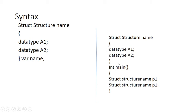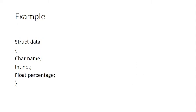You define the structure first, then declare variables like: struct structure_name p1, struct structure_name p2, struct structure_name p3 — and so on. This is another valid way to declare your variables for a structure.